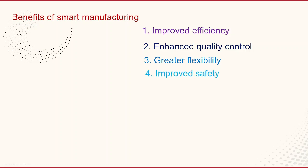The next benefit is improved safety. Smart manufacturing systems can help identify potential safety hazards on the production lines and take action to prevent accidents, helping to create a safer working environment for employees. Next is increased sustainability — smart manufacturing systems can help manufacturers reduce their environmental impact by optimizing energy usage, reducing waste, and adopting more sustainable manufacturing practices.